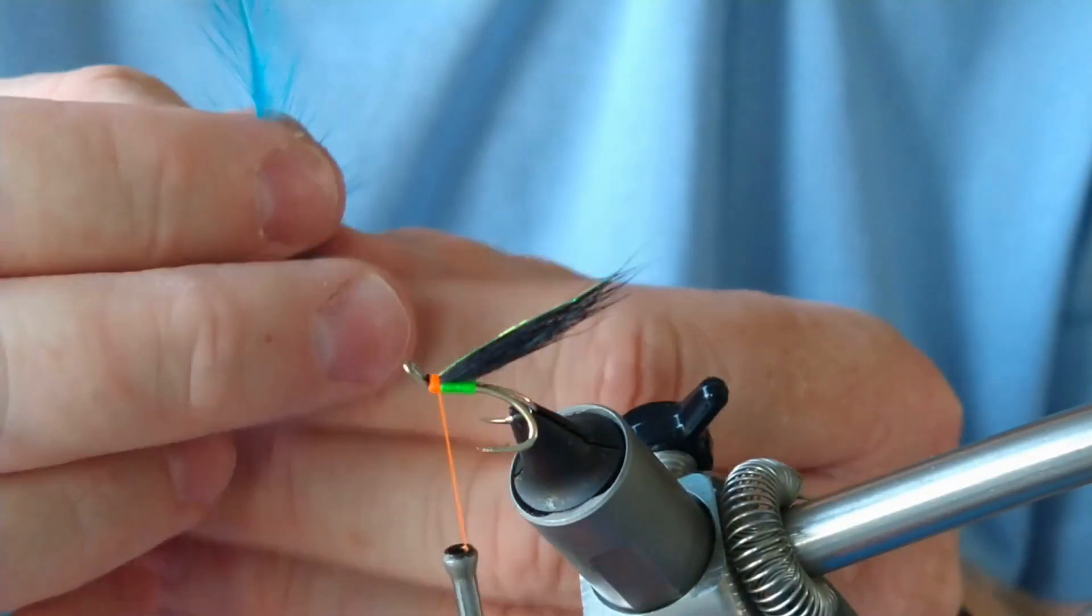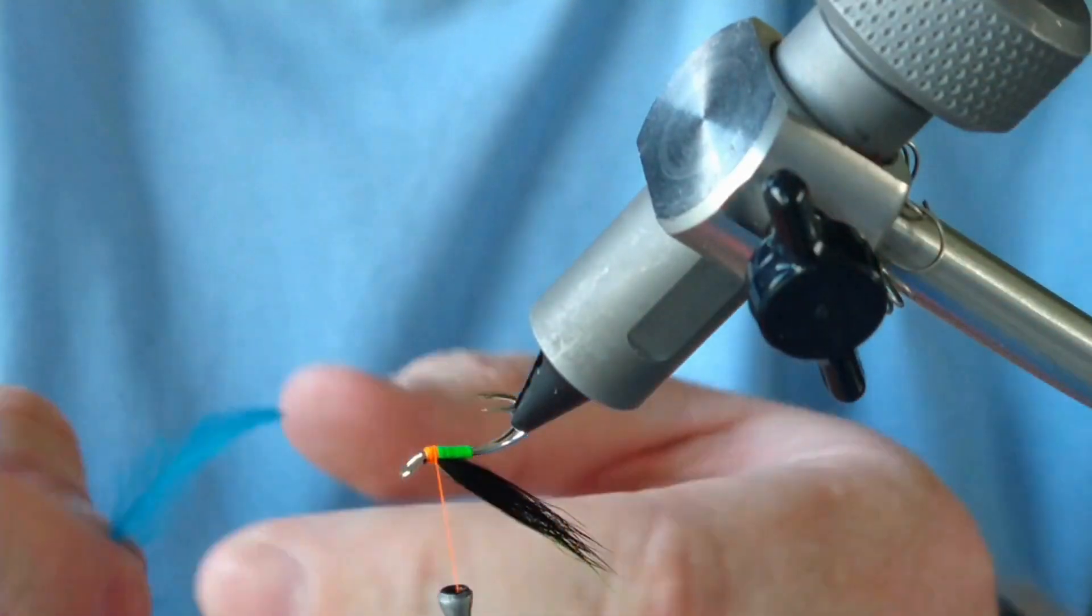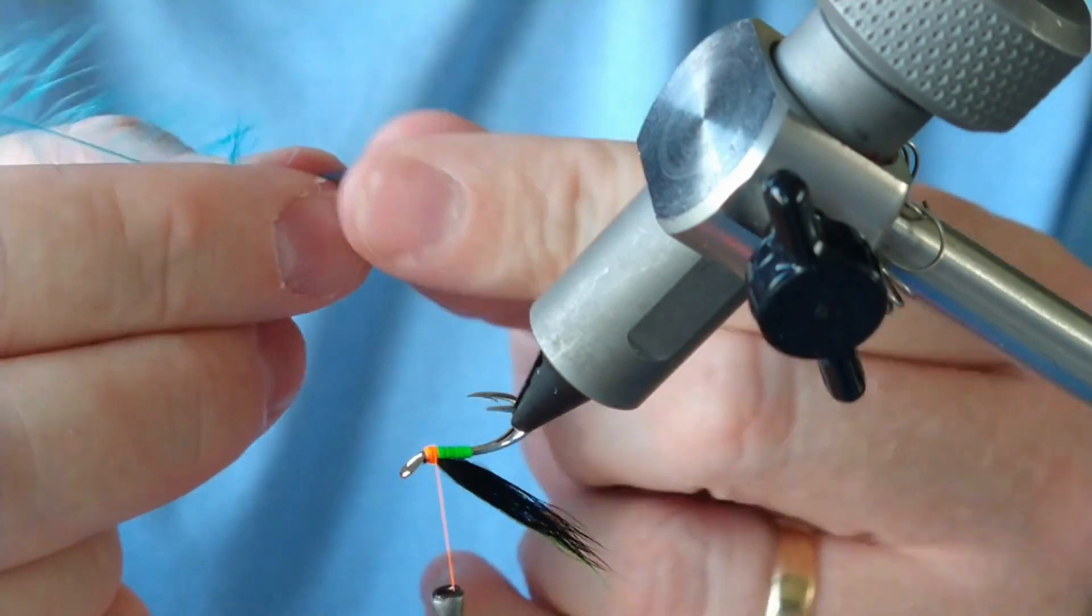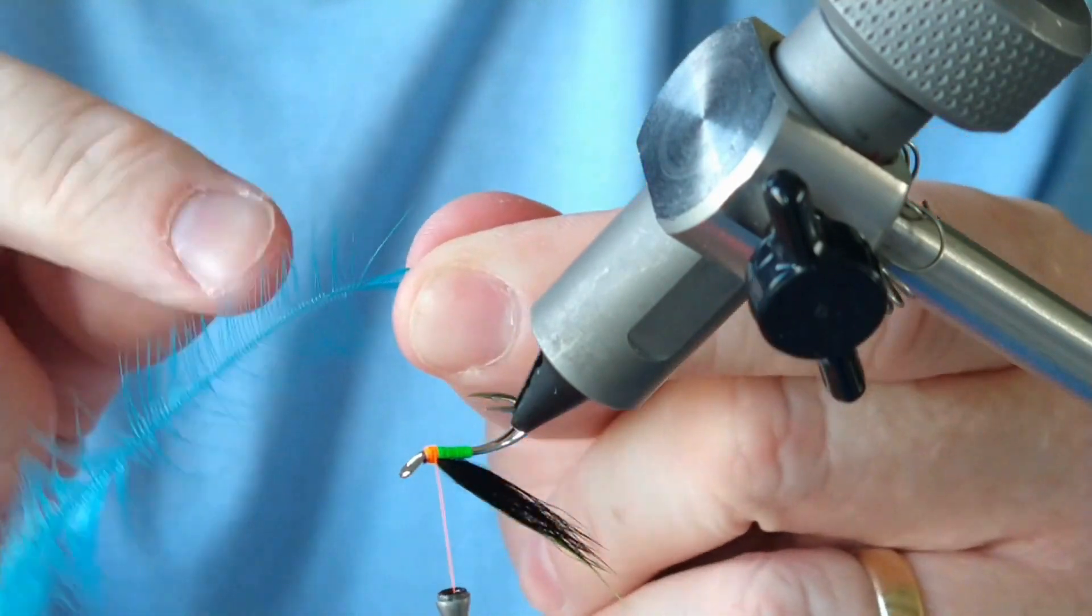Then the last thing I need to do is just add on a beard hackle. I've got blue here, I'm going to flip this underneath, and I just pull the fibers so they're 90 degrees to the shank.